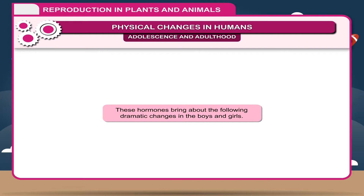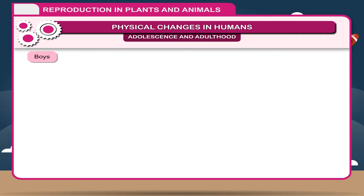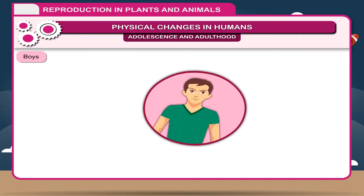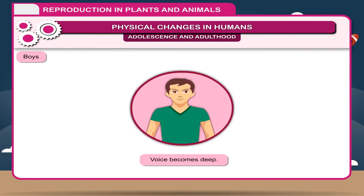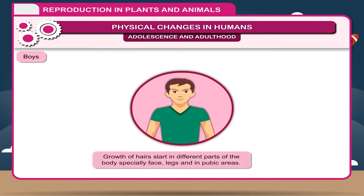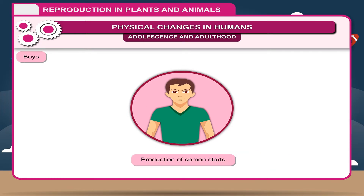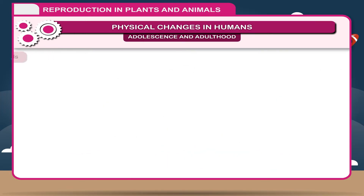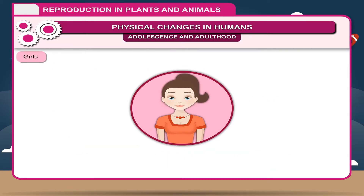These hormones bring about the following dramatic changes in boys and girls. In boys: 1. Voice becomes deep. 2. Growth of hairs starts in different parts of the body, especially the face, legs, and pubic areas. 3. Production of semen starts.